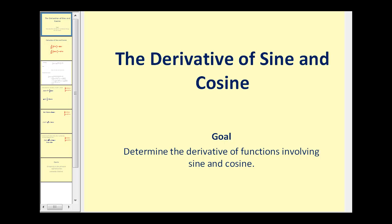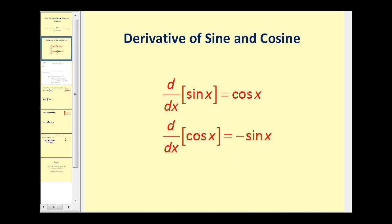Welcome to a video on the derivative of the sine and cosine functions. The derivative of sine x is equal to cosine x, and the derivative of cosine x is equal to negative sine x.